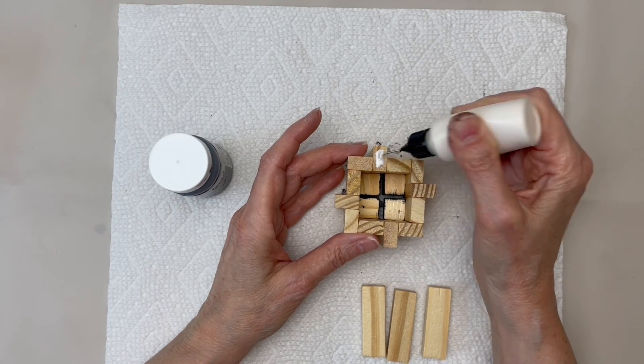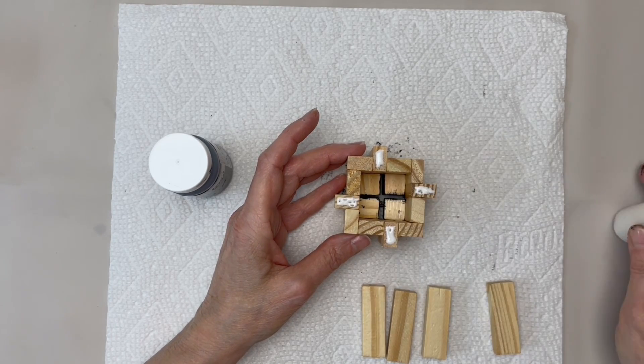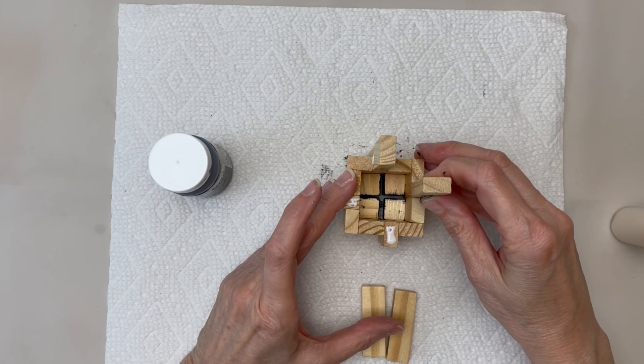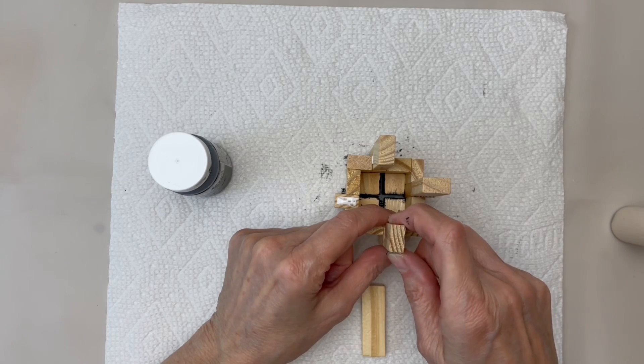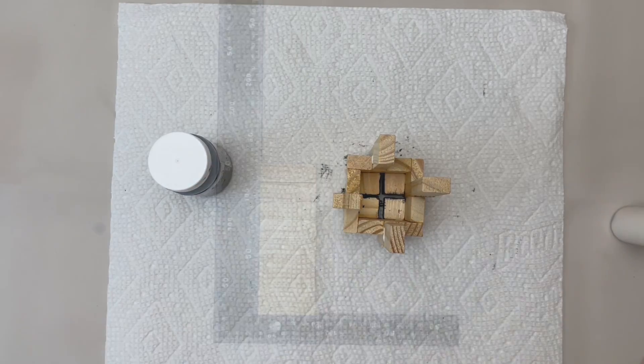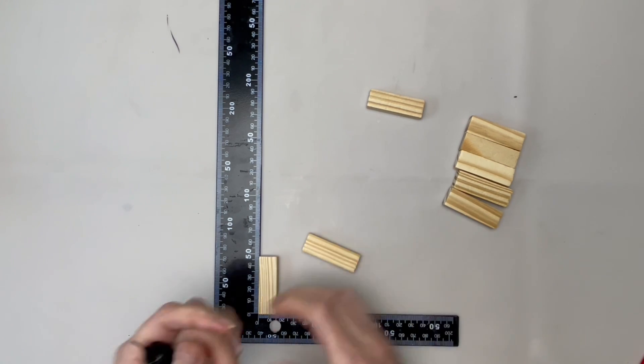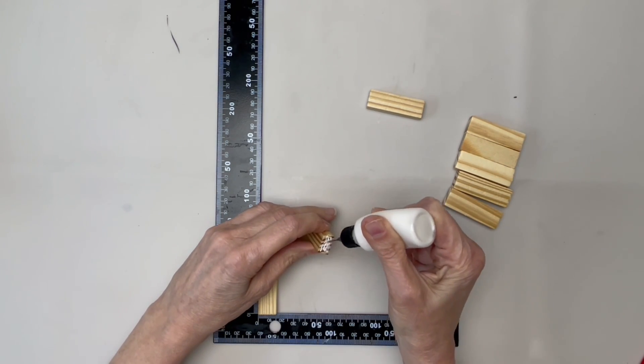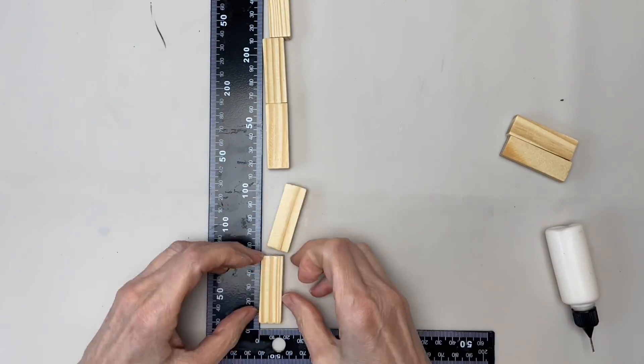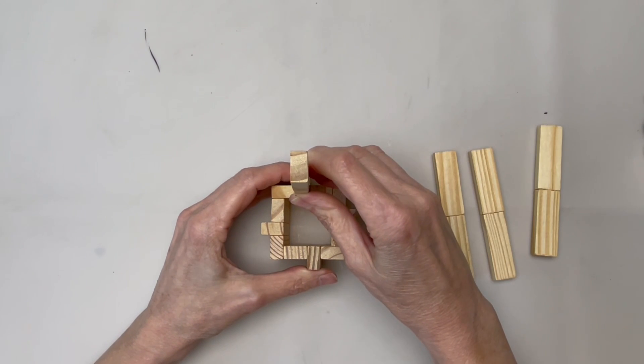Now you're going to add legs to the second tea light holder and they'll just be one block tall. The third tea light holder will have four legs that are two blocks tall so you're going to want to take eight blocks and glue them end-to-end, as you see here. When those are dry, glue them to the bottom, just like in the last tea light holder.